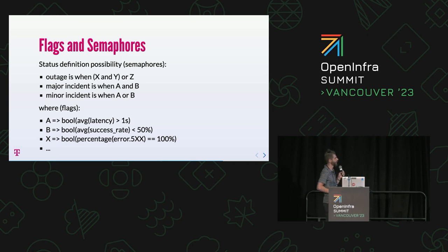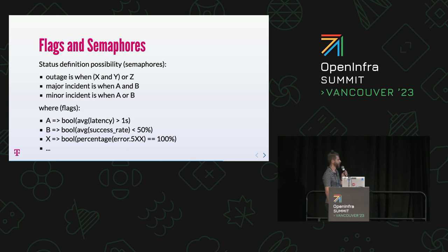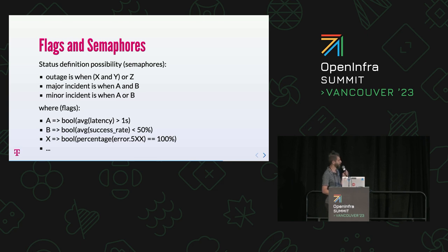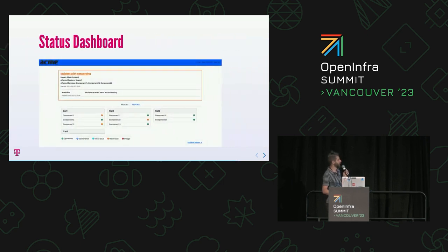So what we can do is define semaphores using binary logic. An outage is for example when condition X and Y or Z; a major incident is when A and B; a minor incident is when A or B. The flags define those conditions as booleans - a flag is raised or not raised. Like: average latency is more than one second, one flag goes up. Success rate in average goes under 50%, another flag is raised. The metric processor evaluates raw metrics and generates semaphores, and the state of those semaphores lands in the status dashboard.